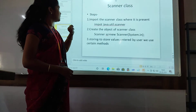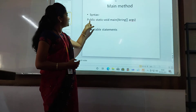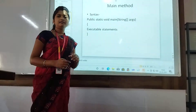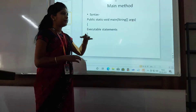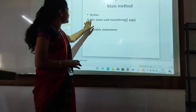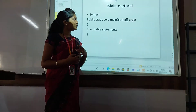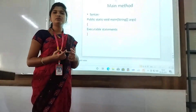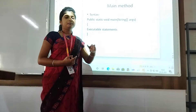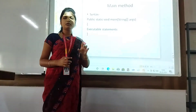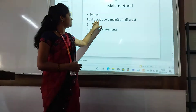The main method is public because public is an access specifier, and by using the public access specifier we can access the main method throughout our package — meaning we can access it from anywhere. The main method is declared as static because normally to access any method we have to create an object and use an object reference variable. But if we use static, then we don't have to create an object of that class and we can access the main method directly.